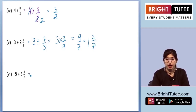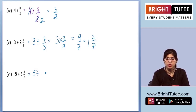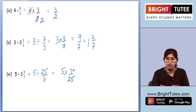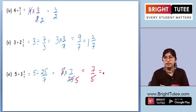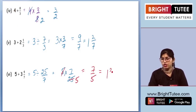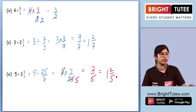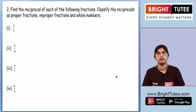Moving on to another part, we do the same thing — converting the mixed fraction to an improper fraction. 7 times 3 plus 4 is 25 by 7. Now we multiply and find the reciprocal. Since we can cancel 5 and 25 out, we are left with 7 by 5. Since it is an improper fraction, we convert it to a mixed fraction, giving the final answer as 1 and 2 by 5.